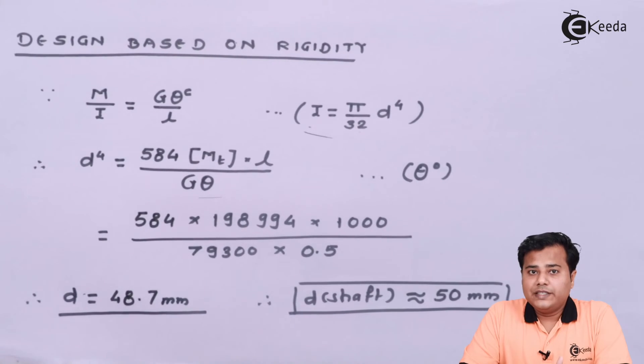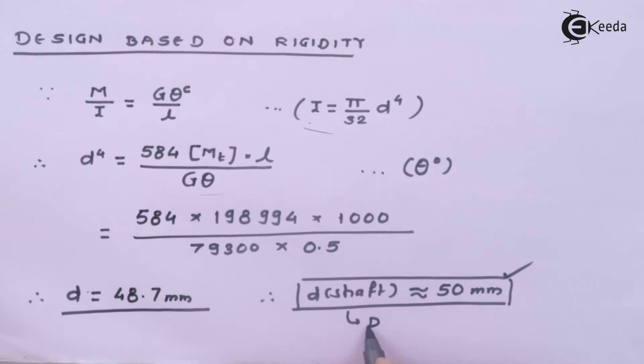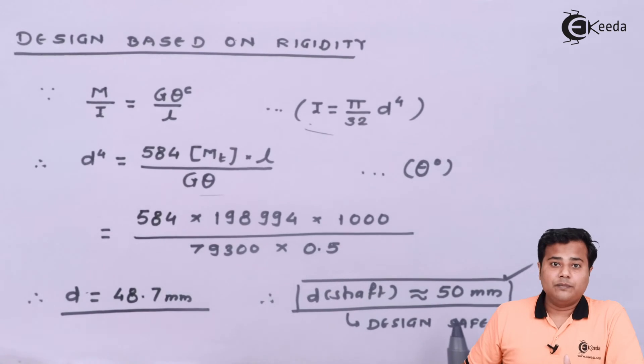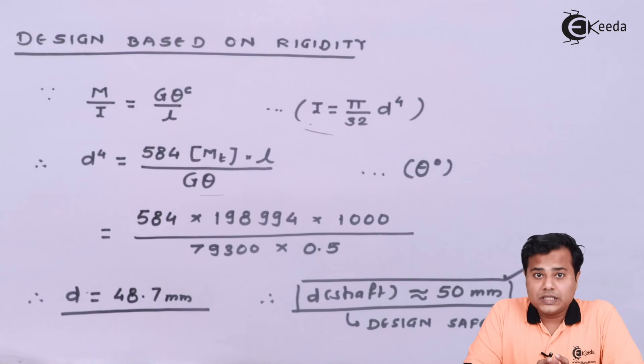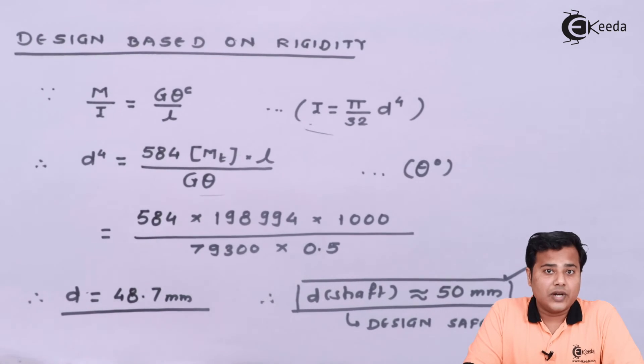Now we have been given two conditions: one was strength and another was angle of twist. We know that diameter is inversely proportional to both these conditions, so more the diameter, safer is the value. With respect to strength, we found the diameter to be 44 millimeters. With the rigidity concept, we found the diameter is 50mm. Since 44 is safe for strength but not safe for rigidity, we have to go for 50 millimeter diameter of shaft, which will be safe in both conditions: angle of twist and strength. That is the final value of diameter of shaft.